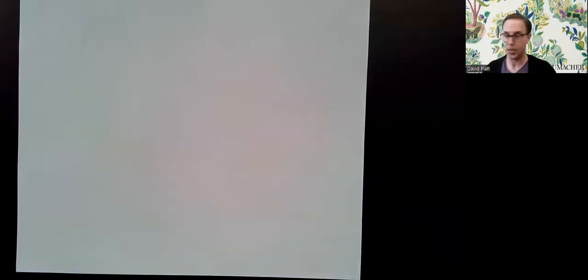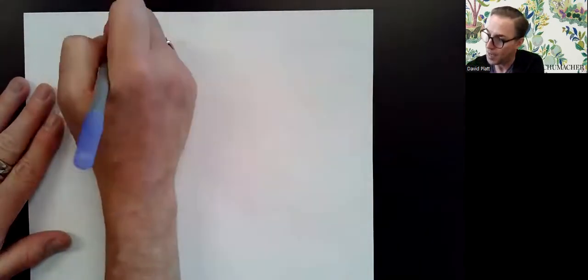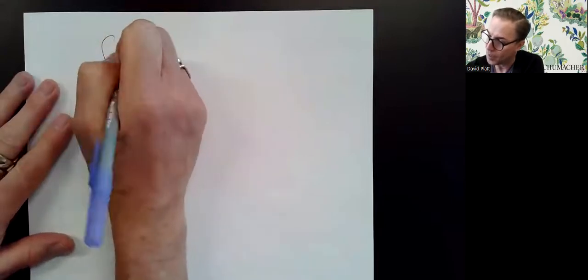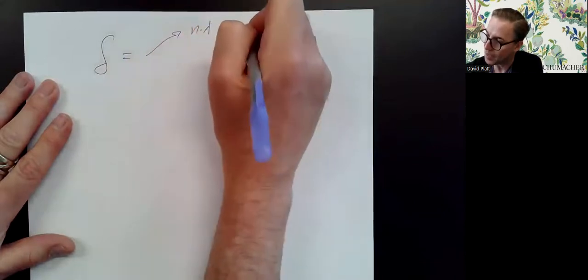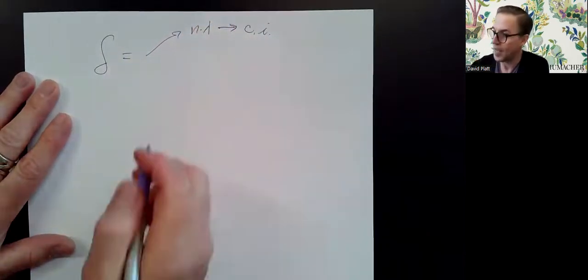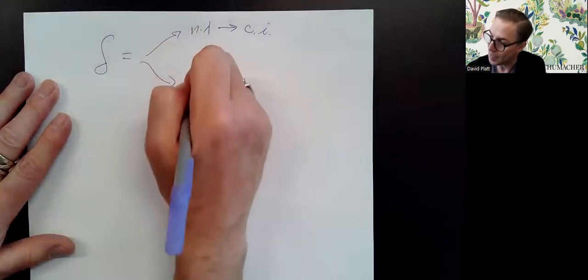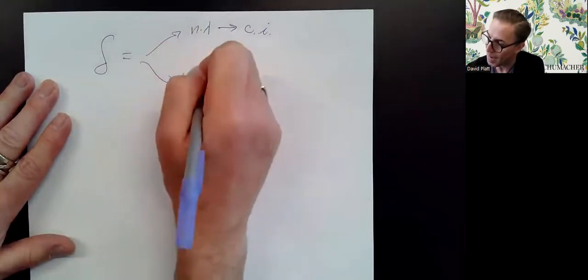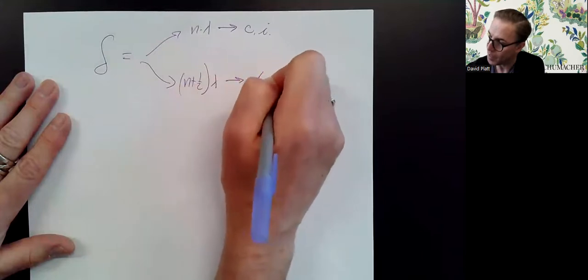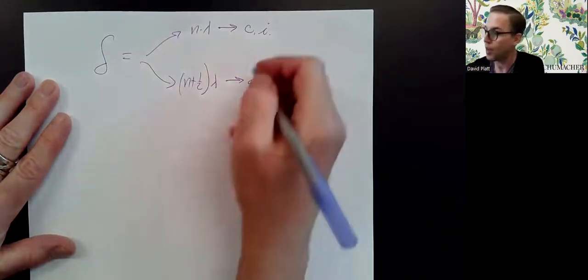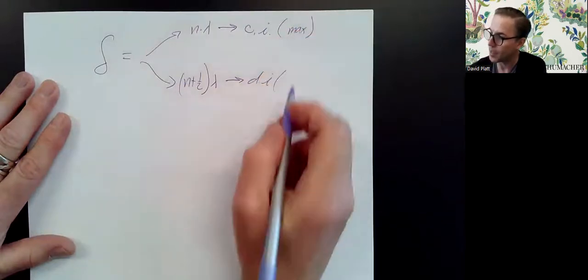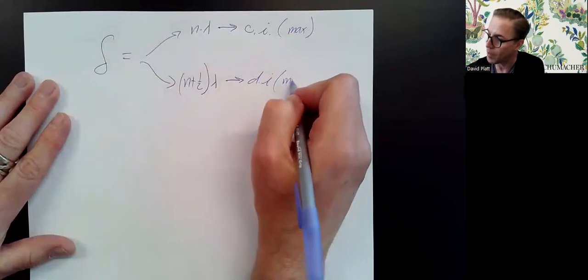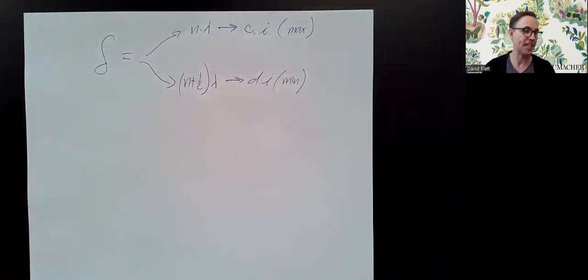To write this using our new vocabulary: if delta equals an integer number of wavelengths, I get constructive interference — maximum intensity. If delta equals an integer plus one-half number of wavelengths, that gives destructive interference — minimum intensity.